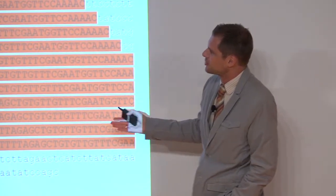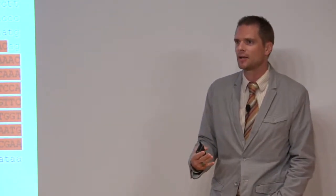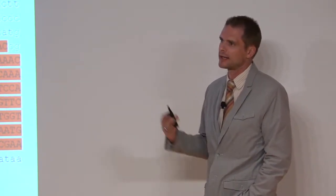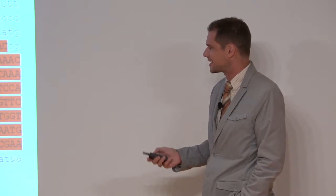They are directed repeats. They're partially palindromic. The five prime end is the reverse complement of the three prime end. And they are interspaced by what used to be thought as random DNA sequences. But later on, analytics enabled us to tell that they were actually captured pieces of DNA from foreign genetic elements, like plasmids and phages, viruses of bacteria, and exogenous DNA.